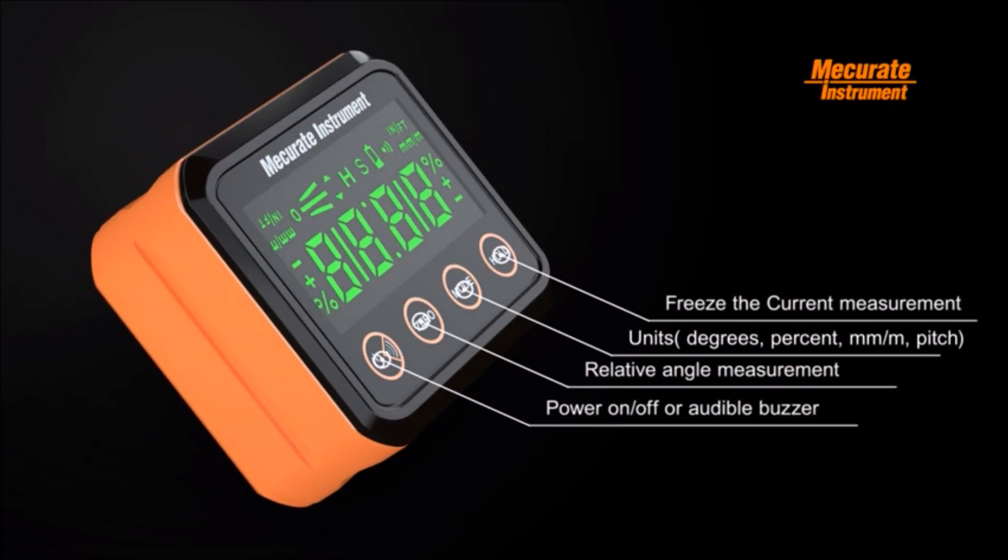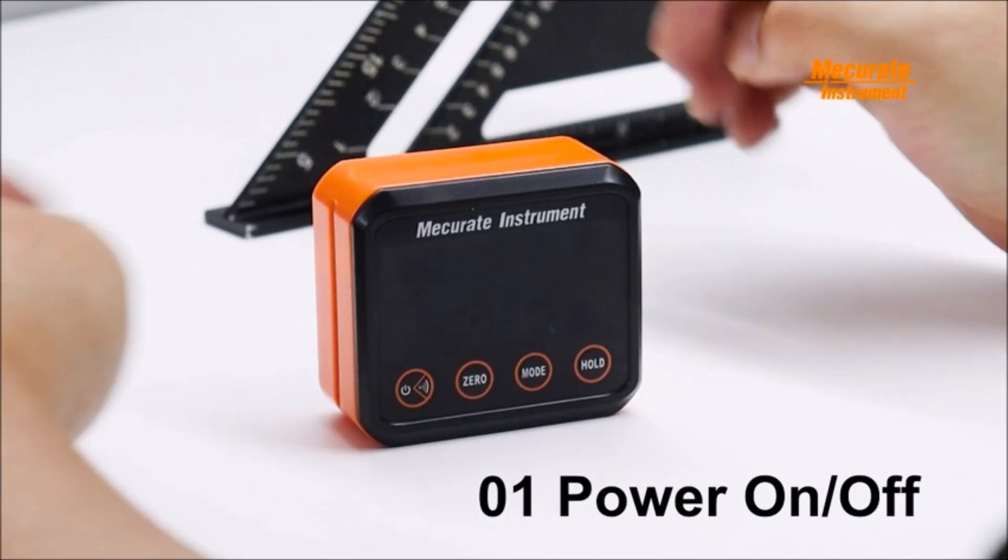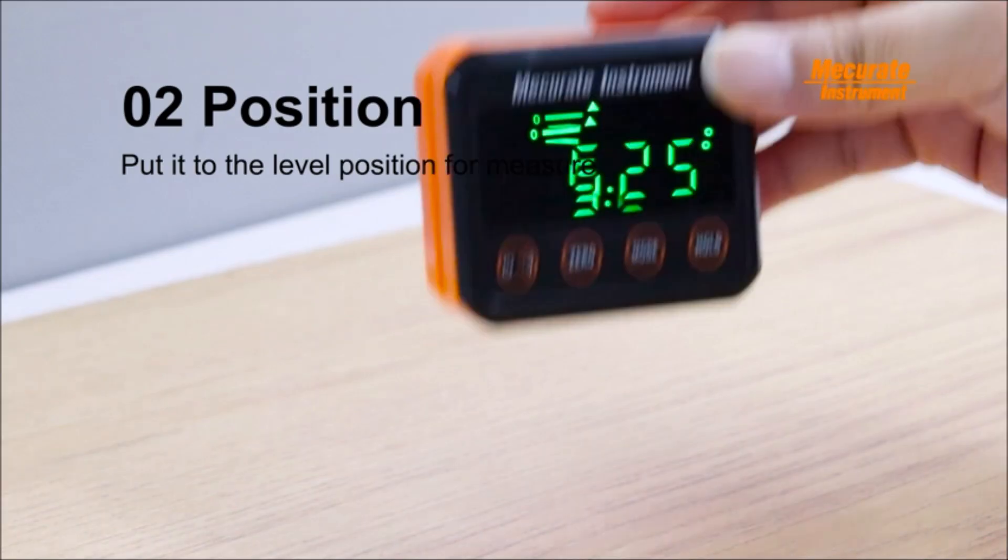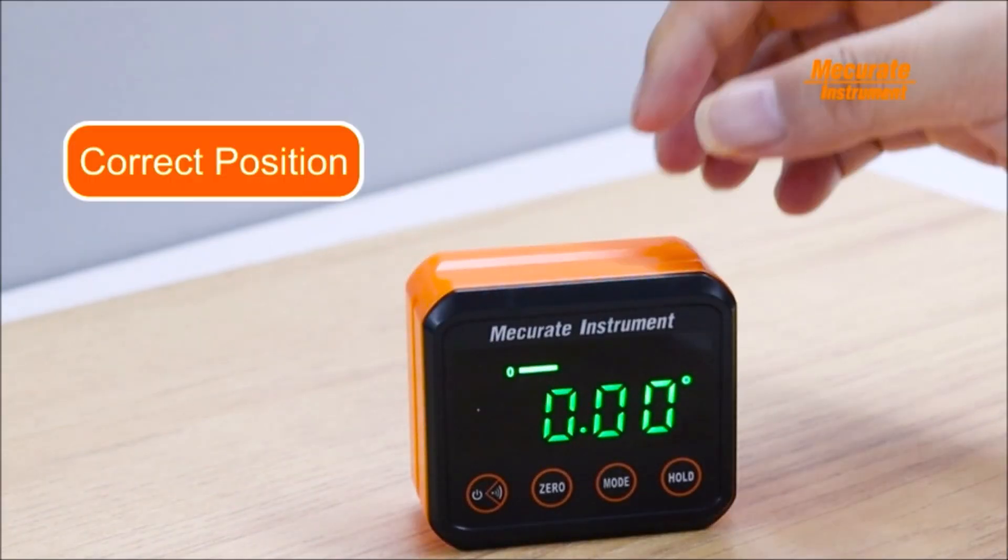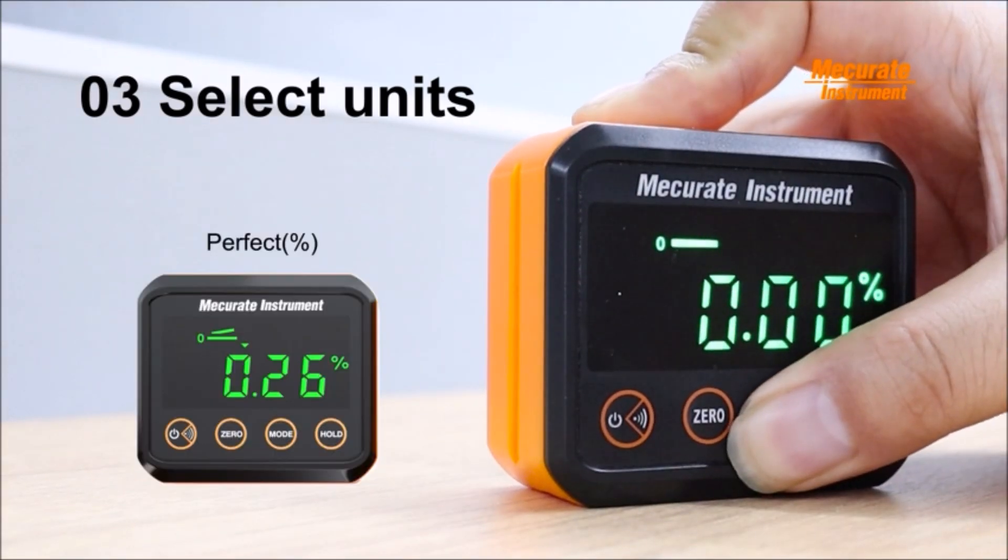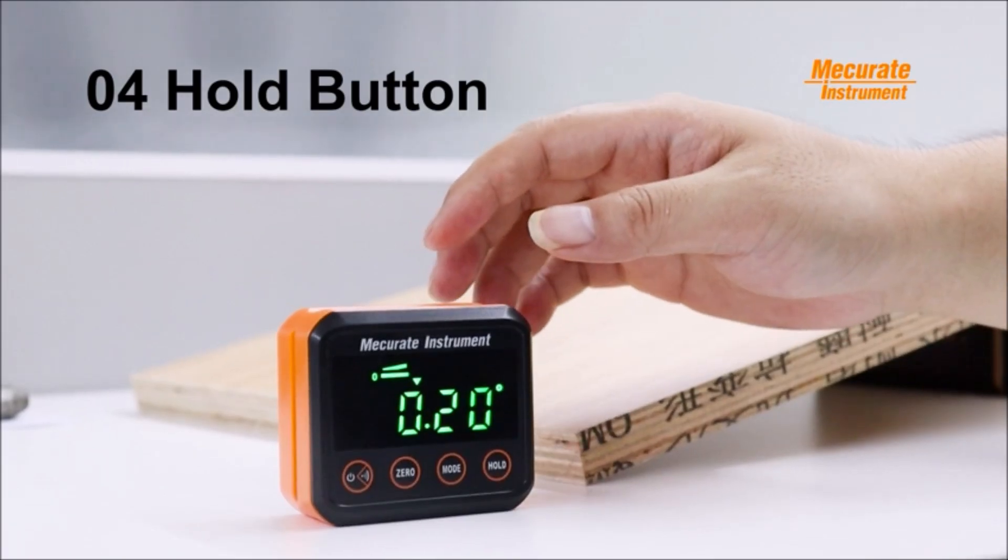Mecurate Digital Angle Gauge and Protractor. Mecurate Digital Angle Gauge ensures the accuracy of data up to plus or minus 0.1 degrees, 0 degrees and 90 degrees, and plus or minus 0.2 degrees at other angles. The resolution is accurate to 0.05 degrees.